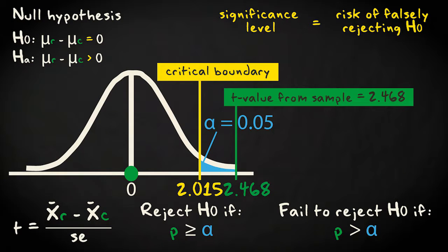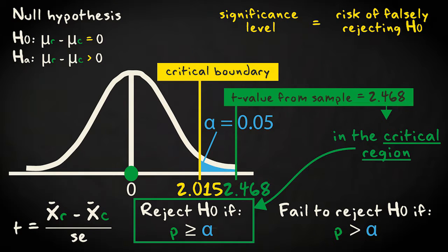If our observed test statistic is more extreme, in accordance with the alternative hypothesis, the observed test statistic value is said to fall in the critical region. You don't know the exact p-value, but you know that it's smaller than the significance level.